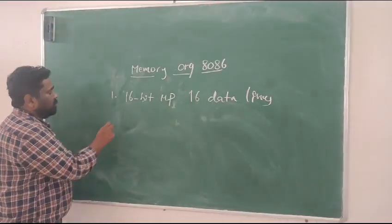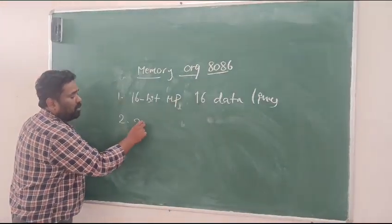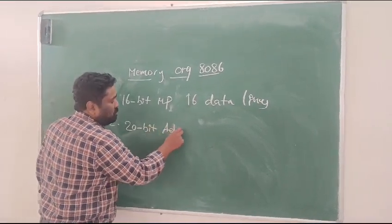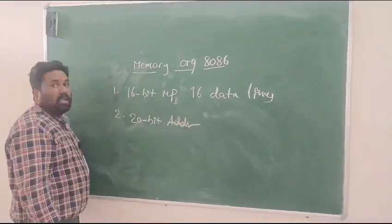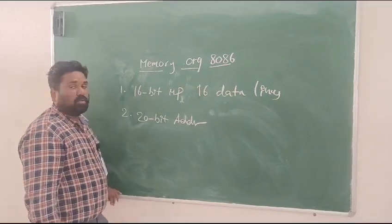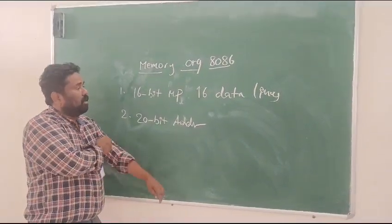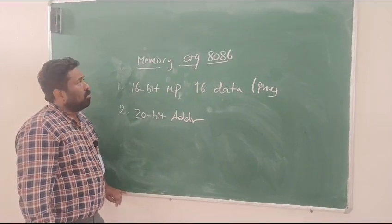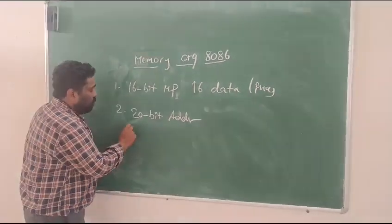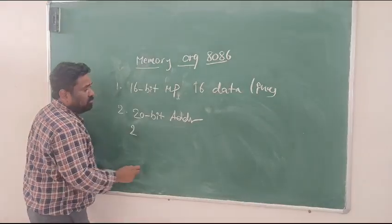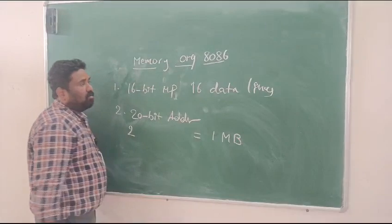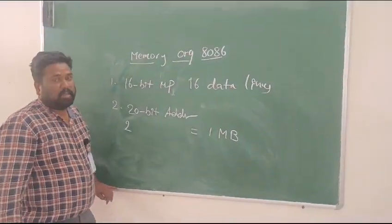And one more specification is it is having a 20-bit address bus. So it depends on the address bus in the microprocessor, we can define the memory that is external memory of microprocessor. That is 2 to the power of 20-bit address lines which is 1 megabyte of physical memory, which we call the external memory.